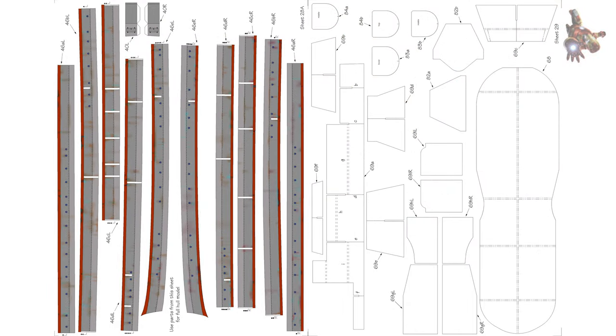For the 127mm gun barrels, use 1mm wire as per the templates on sheet 41.